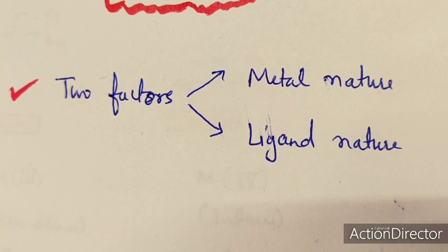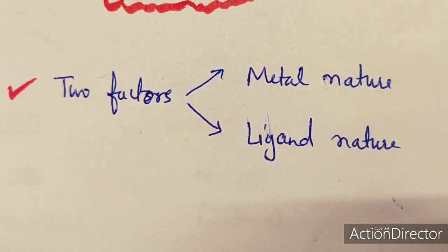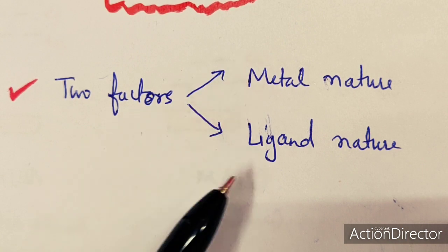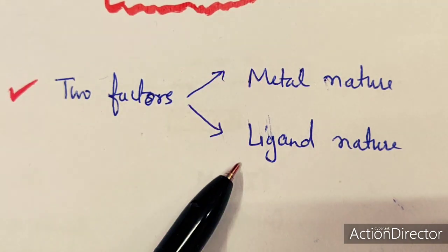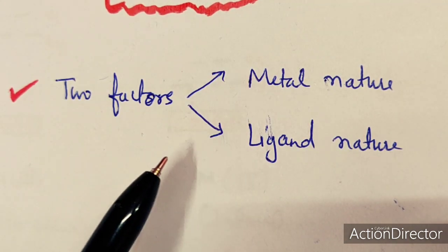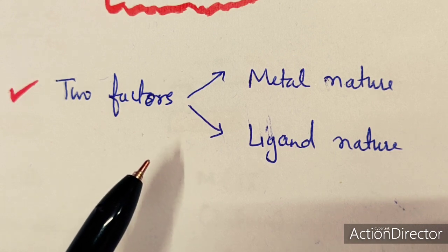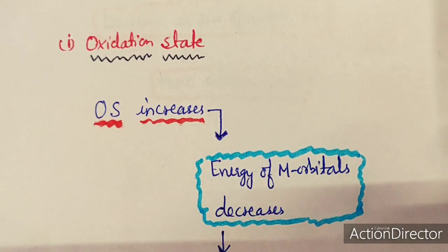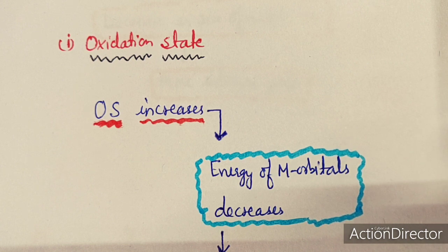There are two main factors affecting the difference between metal orbital energy and ligand orbital energy: the nature of metal and the nature of ligand. The first metal factor that affects the gap between energy levels of ligand orbitals and metal is oxidation state.